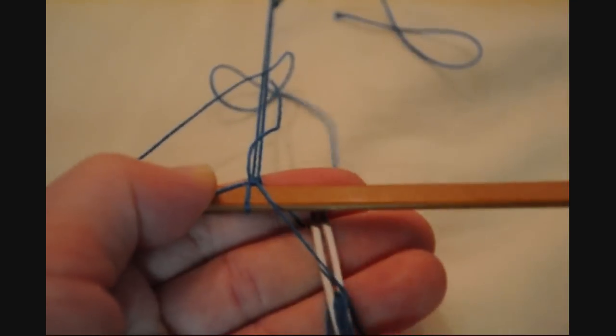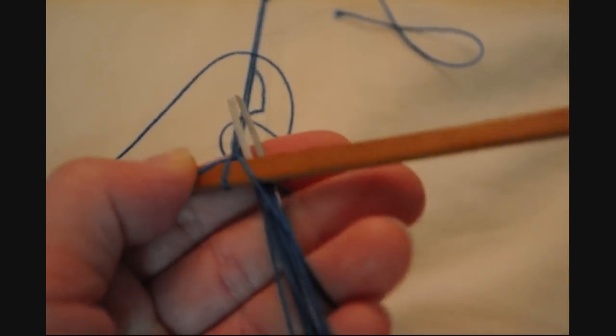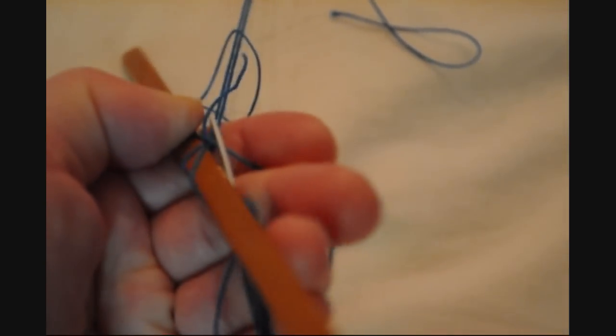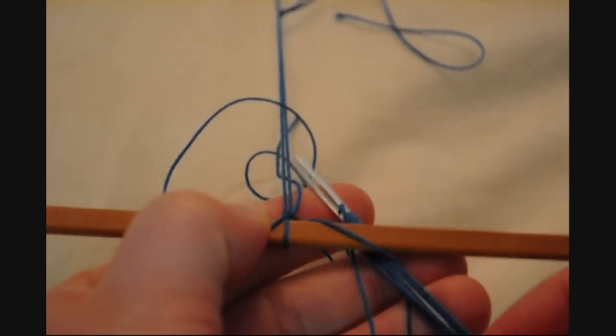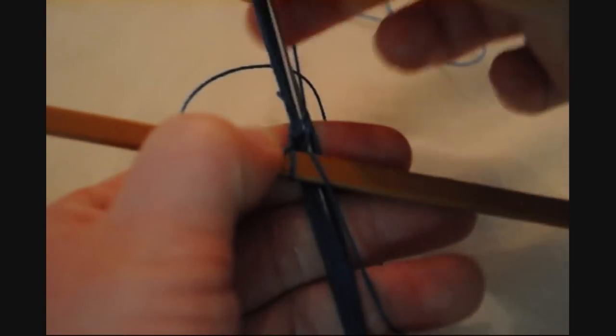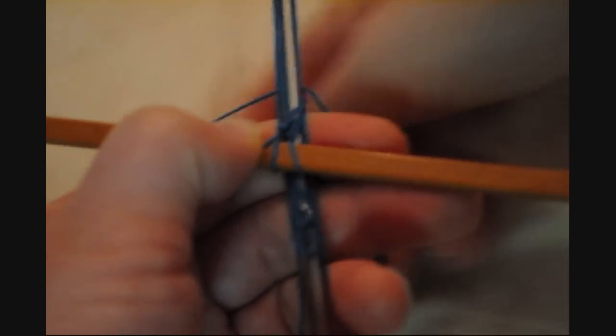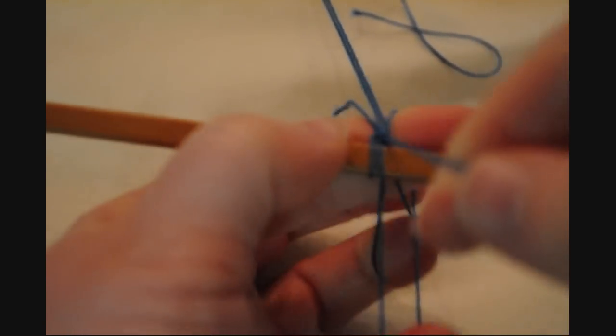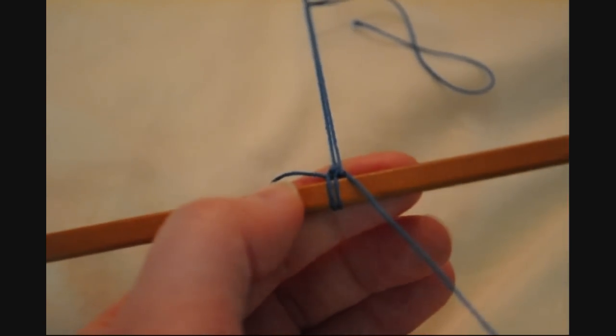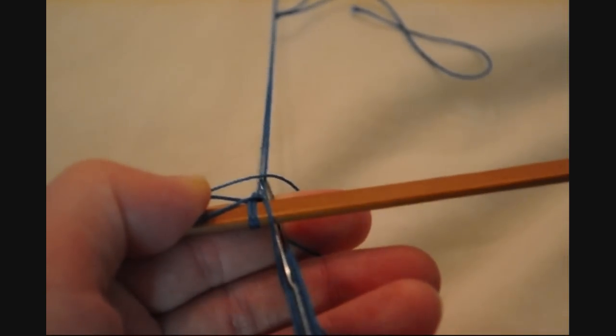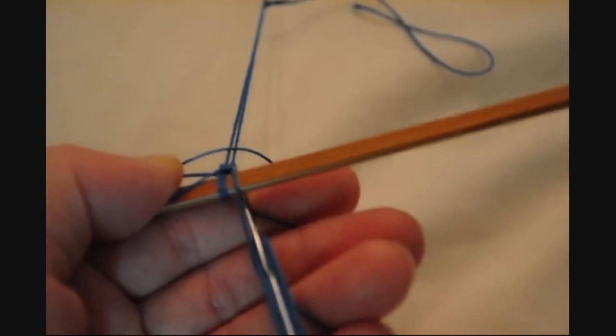So under this third finger. Around here, under my thumb. Around there. I want to make sure that I'm going over the string before it. So see that string right there? I'm going over it. And then I go into here. Being careful about the leftover thread from the first half hitch knot that I did into the foundation loop. And that would be your second stitch. This is just plain stitch in netting.